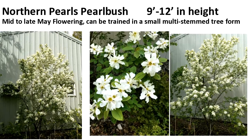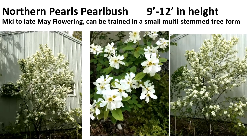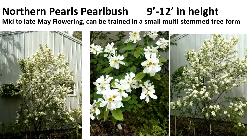Northern Pearls pearl bush can be trimmed into a small tree form, 9 to 12 feet in height. The bloom in mid-May is just covered with bright white small flowers on a very attractive plant — and that's exactly when you're wanting to see something in flower. If you can find Northern Pearls pearl bush, it's been hardy in our area and provides some of that early spring color for us.